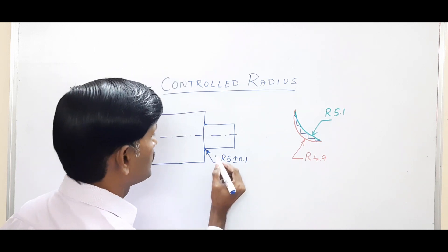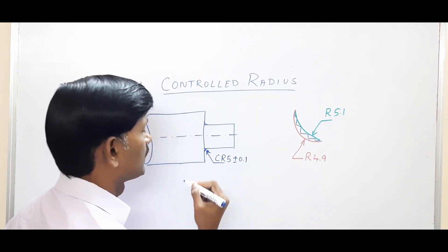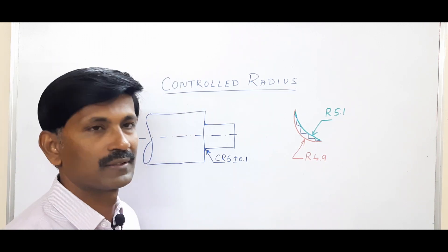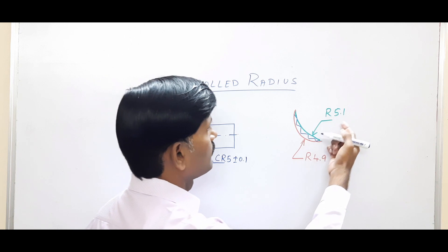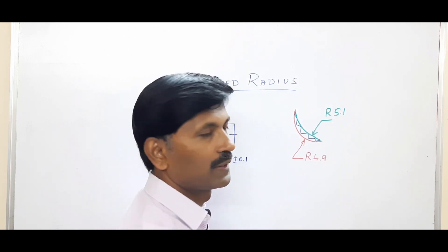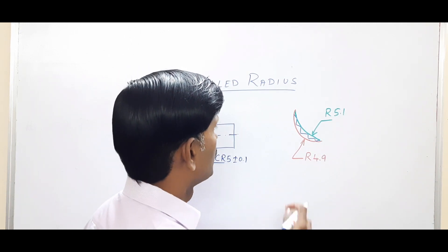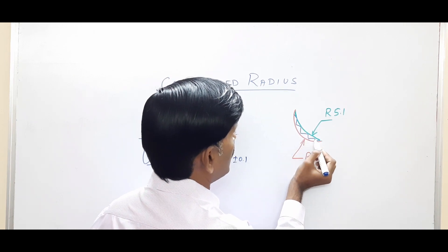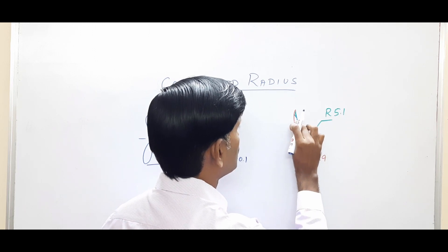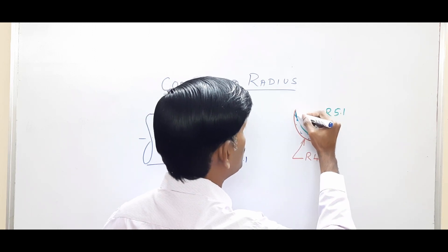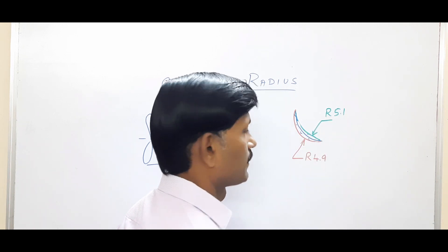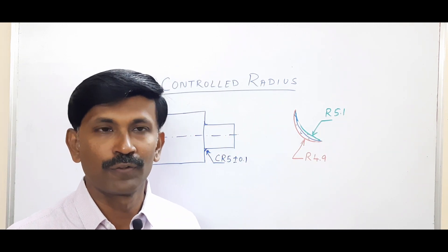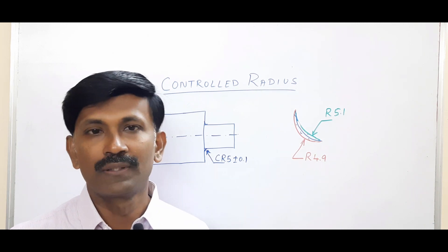In all such cases, we have to add a C in front of R, which is called controlled radius. Now this controlled radius surface must also lie within this boundary of R5.1 and R4.9, but the only thing is flats and reversals are not allowed. So here what is required is a smooth surface within the boundary by which we are able to eliminate the stress concentration fully. So this is called controlled radius.